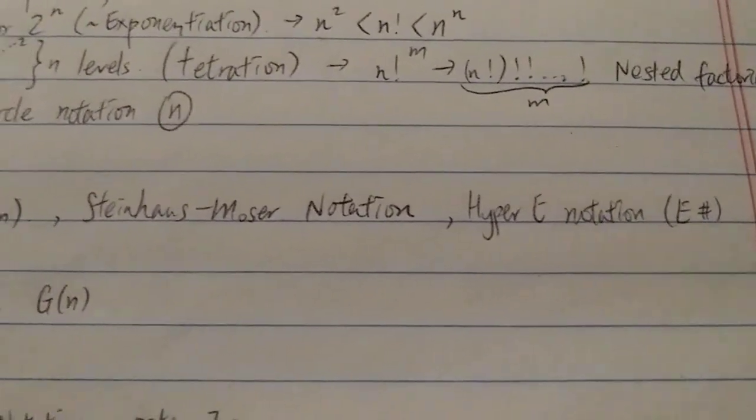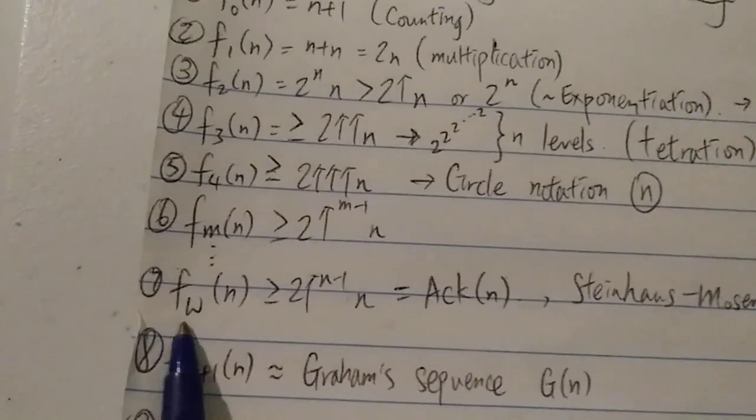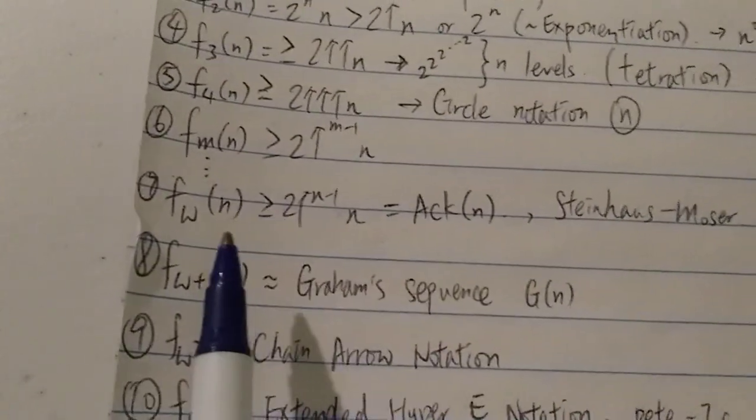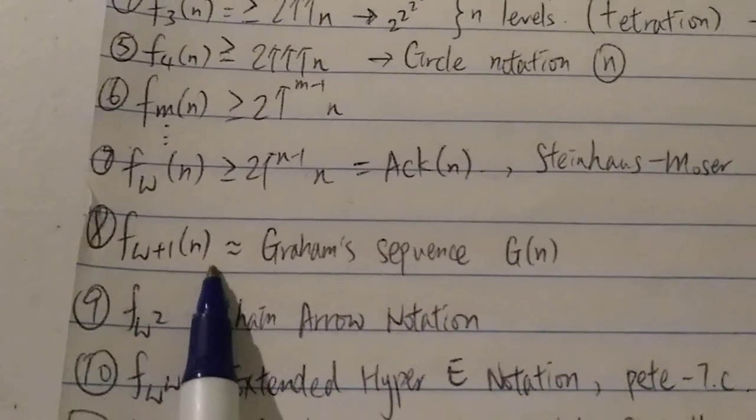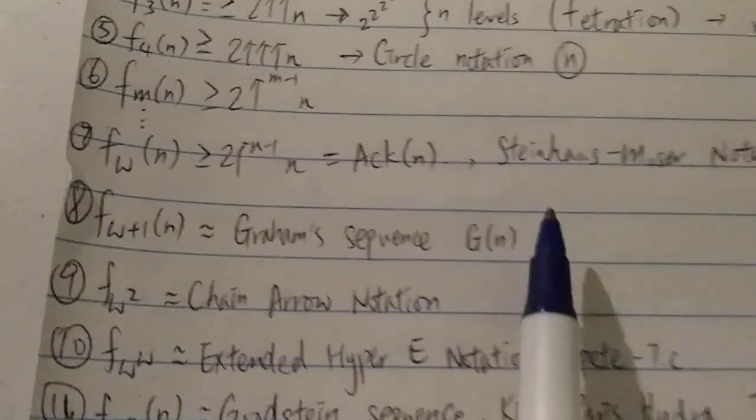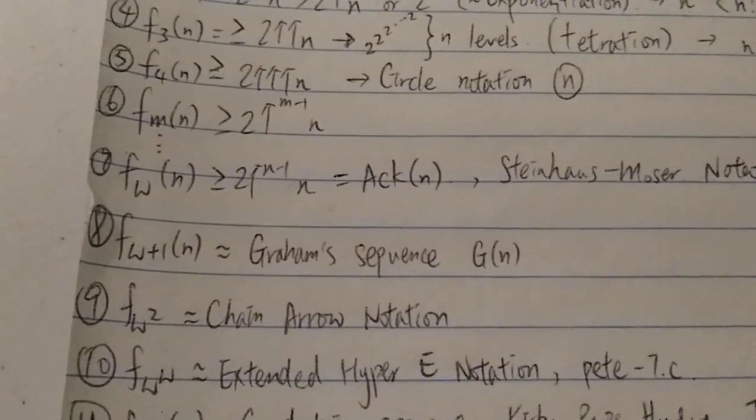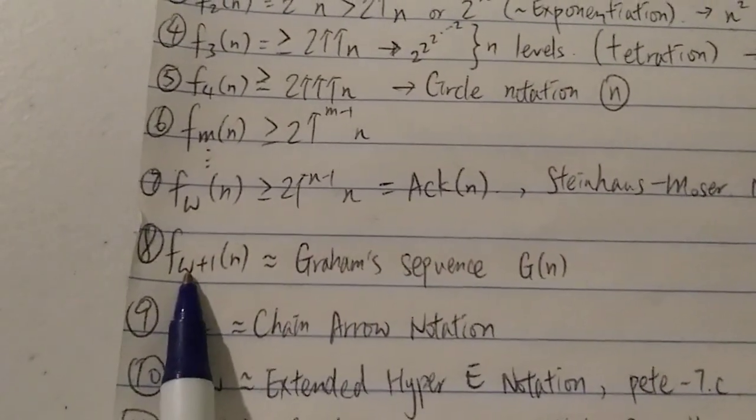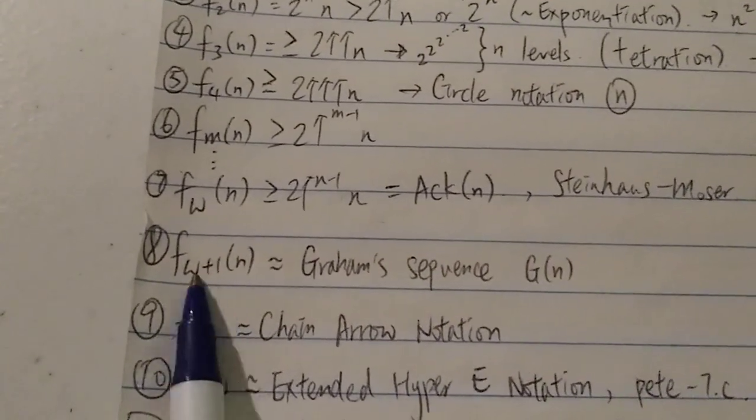And next, we have F_{ω+1}(n), which is, we have the g sequence over here, the Graham sequence. So g2, g3, g4, g64, g65. It will grow at around approximately this rate.